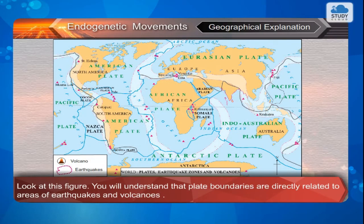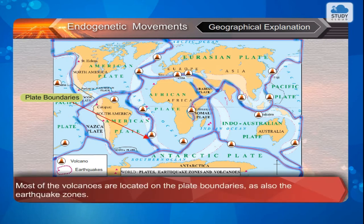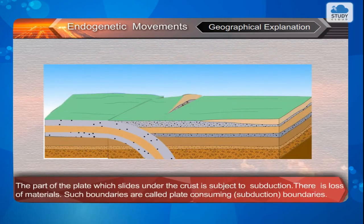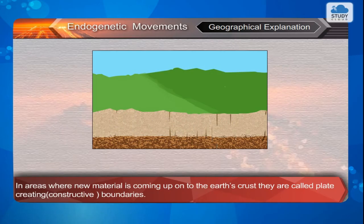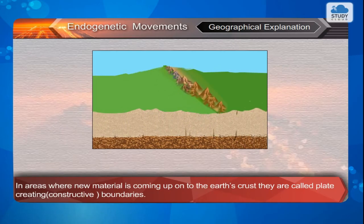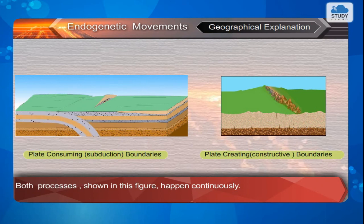Geographical explanation: Look at this figure. You will understand that plate boundaries are directly related to areas of earthquakes and volcanoes. Most of the volcanoes are located on the plate boundaries, as are the earthquake zones. The part of the plate which slides under the crust is subject to subduction — there is loss of materials. Such boundaries are called plate-consuming subduction boundaries. In areas where new material is coming up onto the Earth's crust, they are called plate-creating constructive boundaries. Both processes shown in this figure happen continuously.